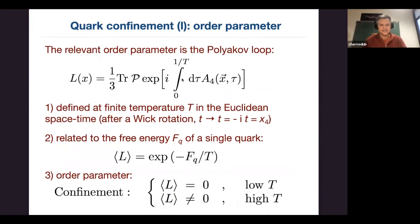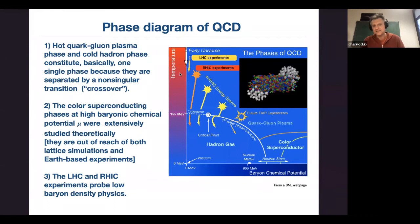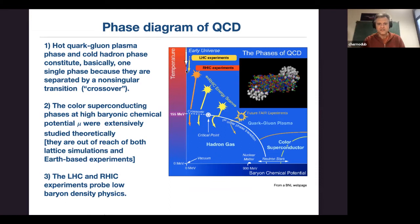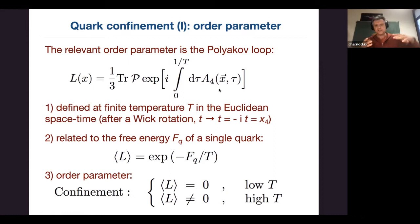There are two phases separated by a line: the deconfinement phase at high temperature where quarks spread everywhere, and the confining phase at low temperature where quarks and anti-quarks or three quarks together are bound into hadrons. When you put the system on the lattice and discretize it, the parameter that distinguishes between two phases is called the Polyakov loop — the path-ordered integral of the fourth component of the gauge field along the compactified temporal direction.